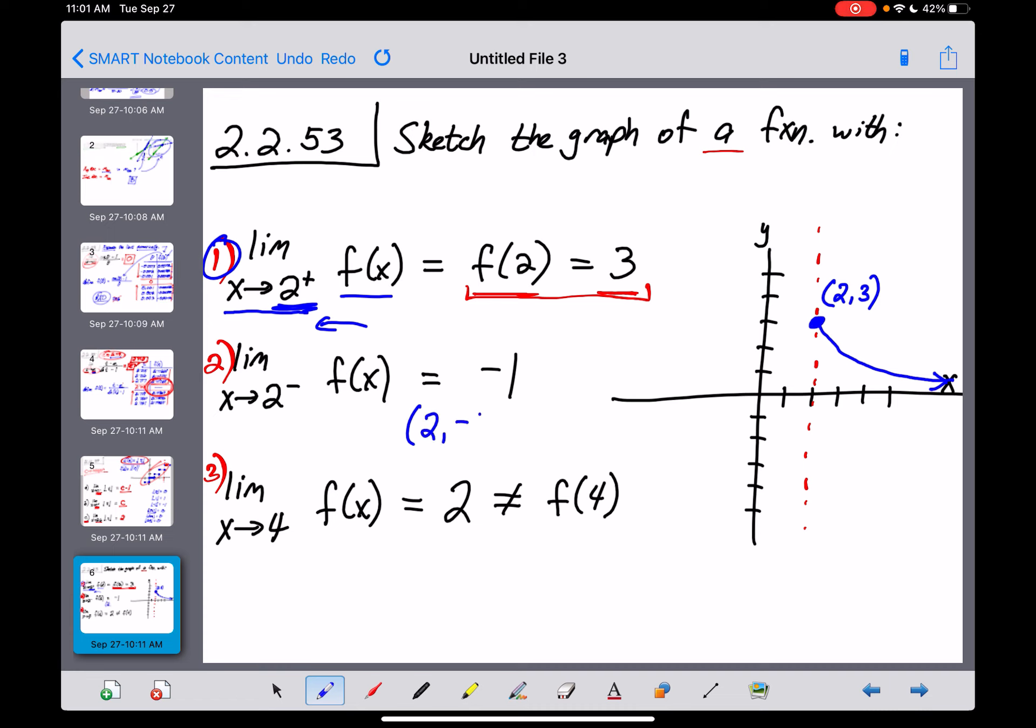But notice here, the value of f of 2 has to be 3, not negative 1. That tells me that this needs to be an open dot at the ordered pair (2, -1). So 2, negative 1 is going to get me right here.